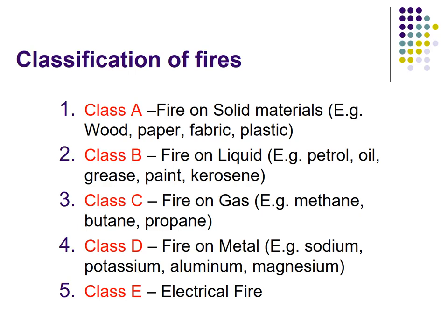Class A fire: fire on solid material, for example wood, paper, fabric, and plastic. Class B fire: fire on liquid, for example petrol, oil, grease, paint, and kerosene. Class C fire: fire on gases such as methane, butane, and propane.